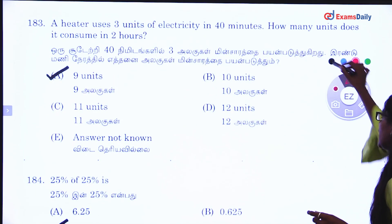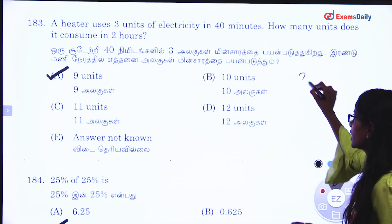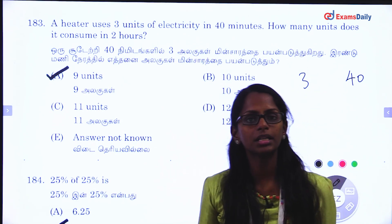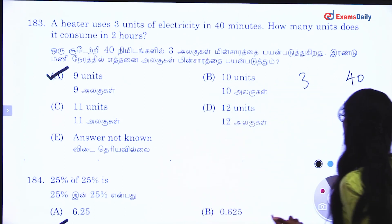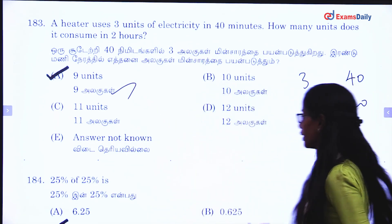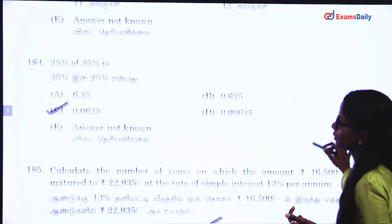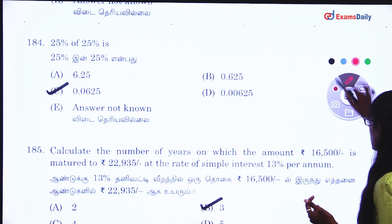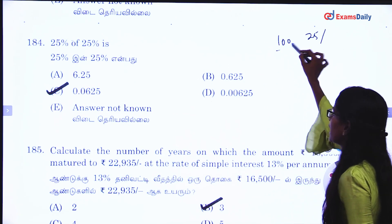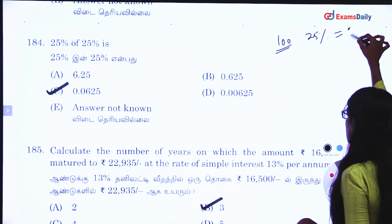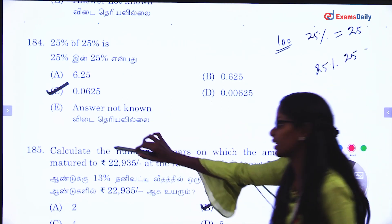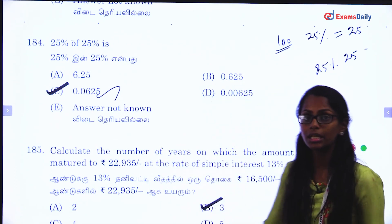Next question. A heater uses 3 units of electricity in 40 minutes. How many minutes for 9 units of electricity? Substitute x1, y1 — the answer is 120 minutes. Next question: 25 percentage of 25 percentage. So 25% of 25% — the answer is 0.0625.